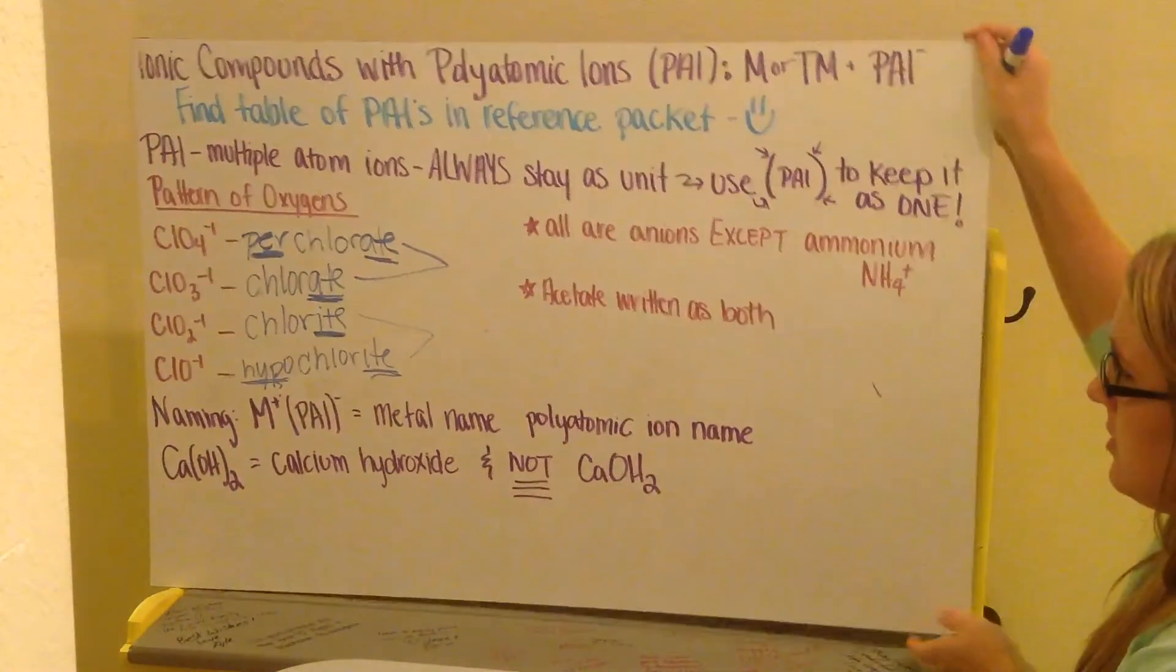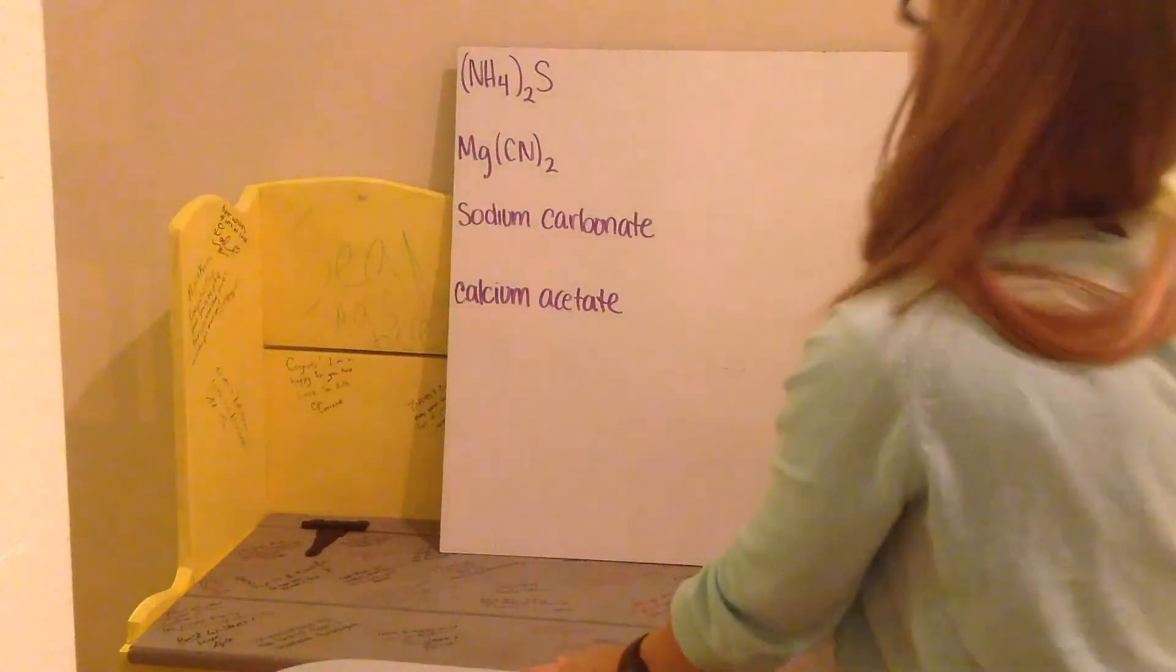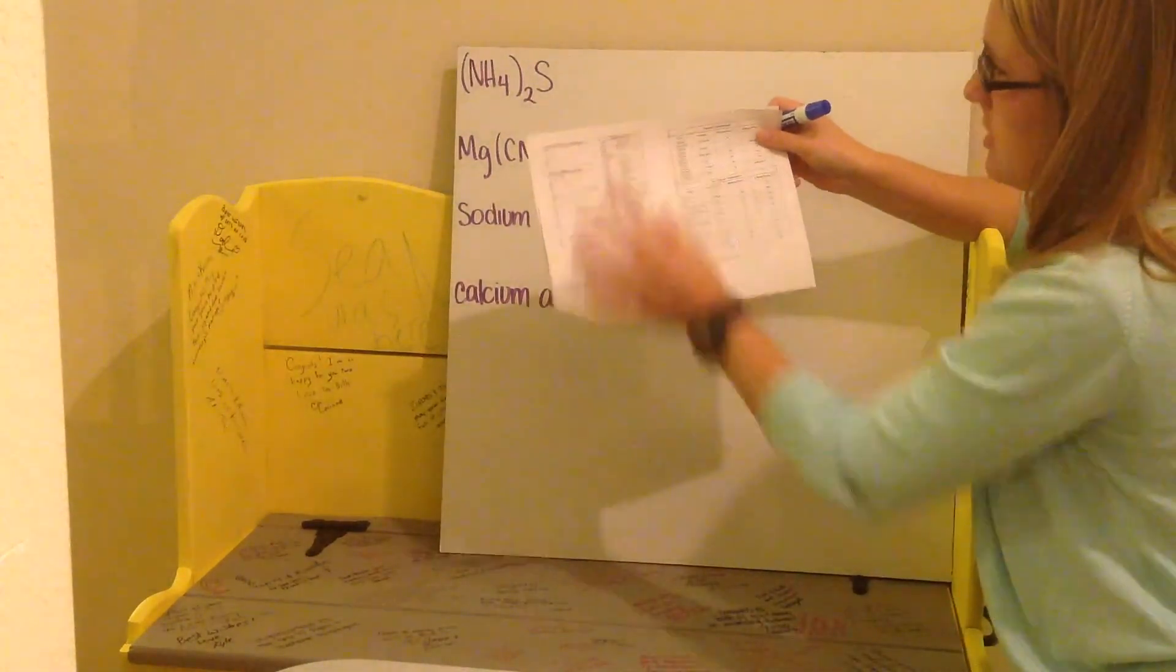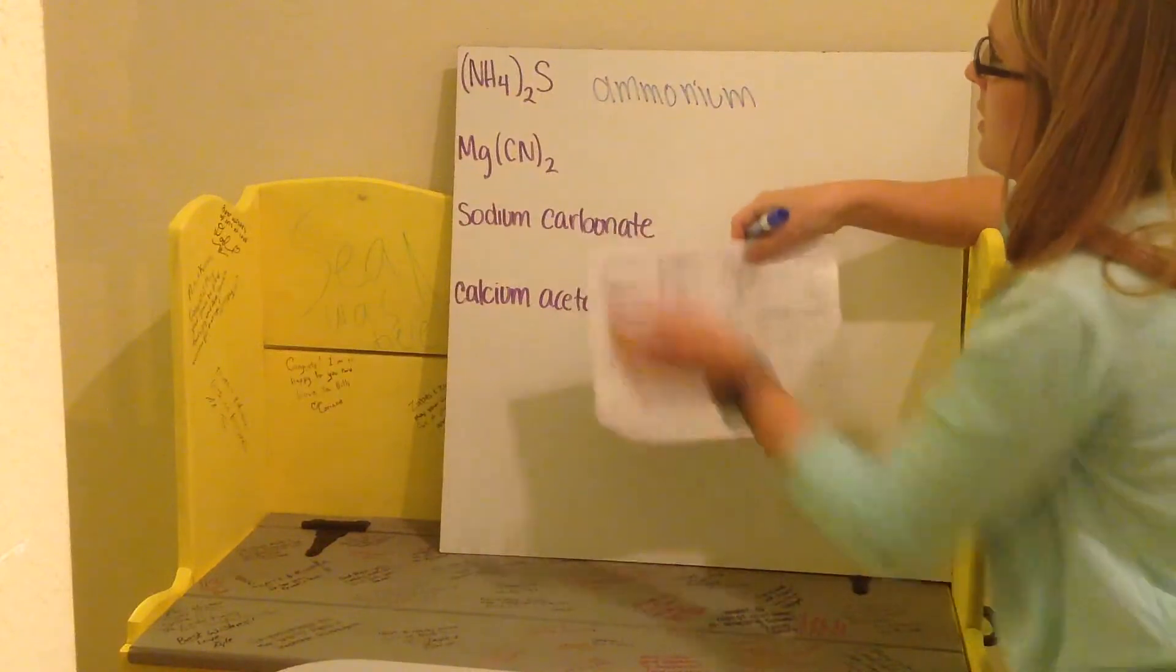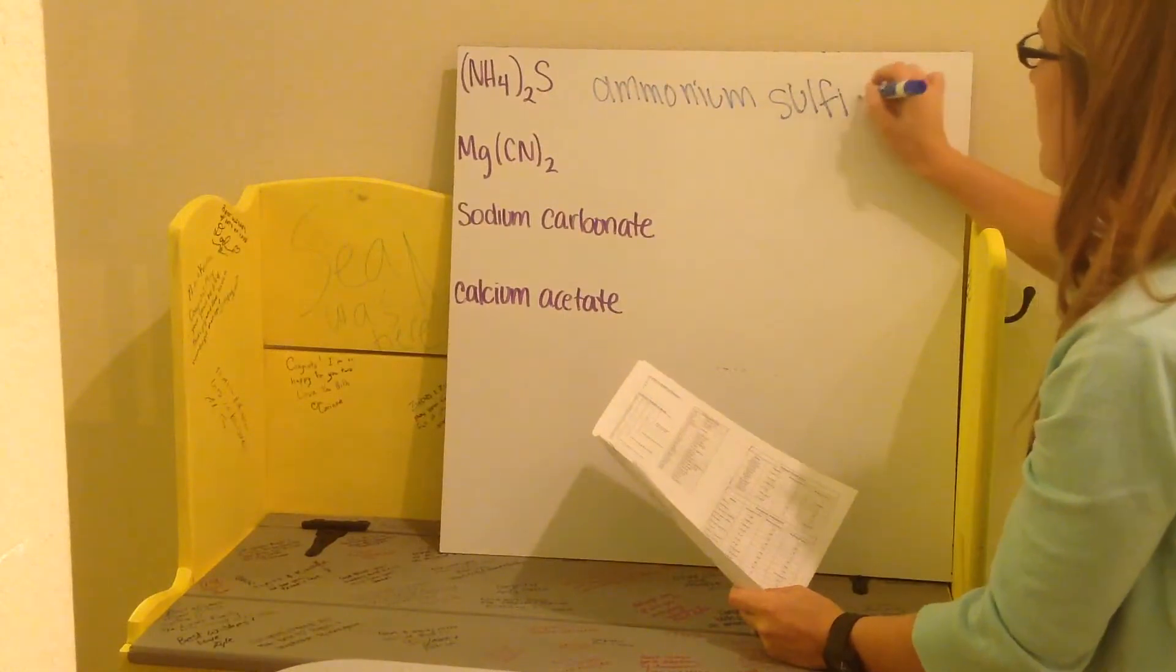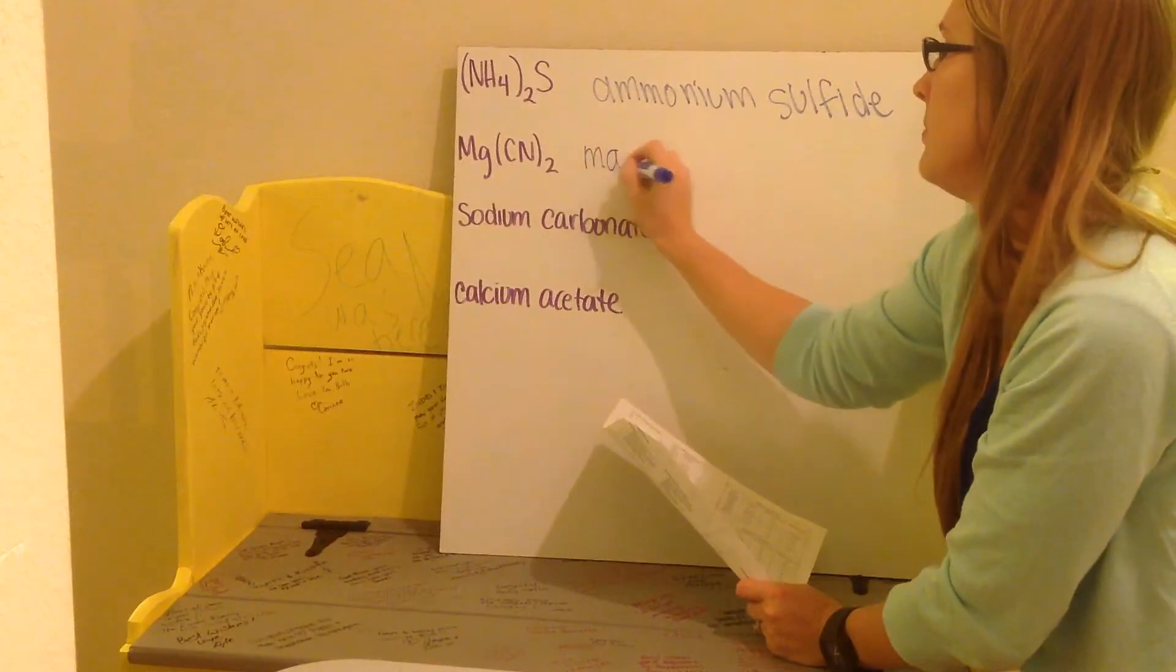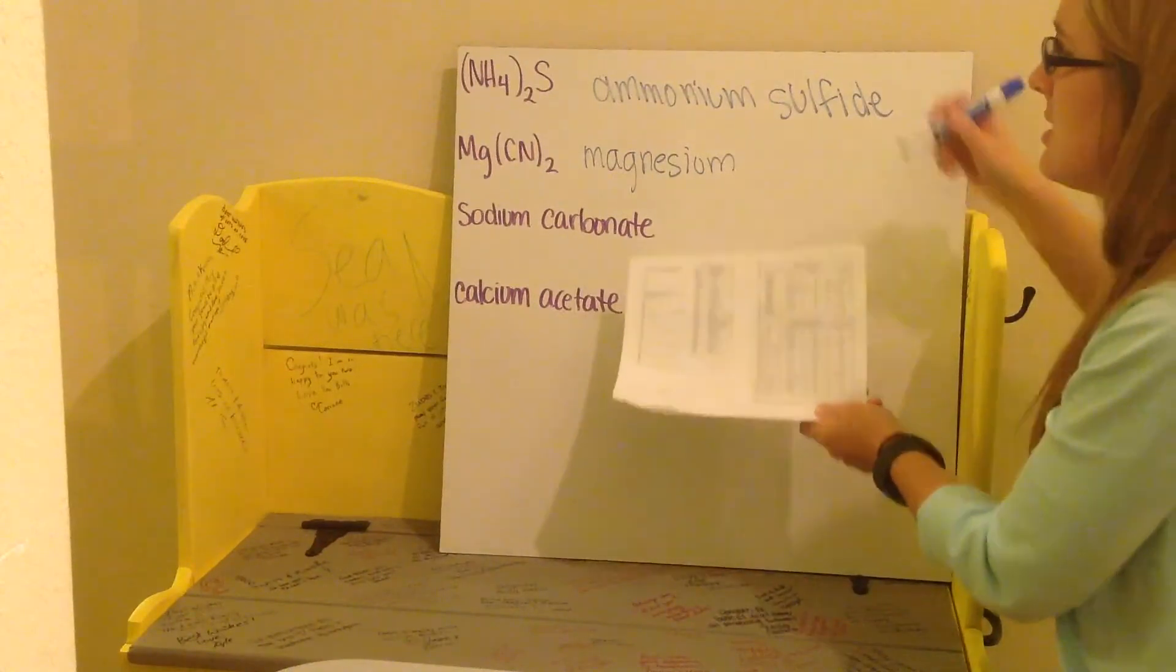Let's go through a couple examples. Here we see that we have multiple elements in a compound, so that tells us we have to refer to our chart. NH4 on our chart is ammonium, so I'll just write ammonium. Sulfur is an anion here, so I need to write my stem, sulf, and then I have that -ide ending. Next, I have magnesium, and then with the polyatomic ion with my parentheses, so I write magnesium. And I look for CN on my chart, I see that CN is cyanide.